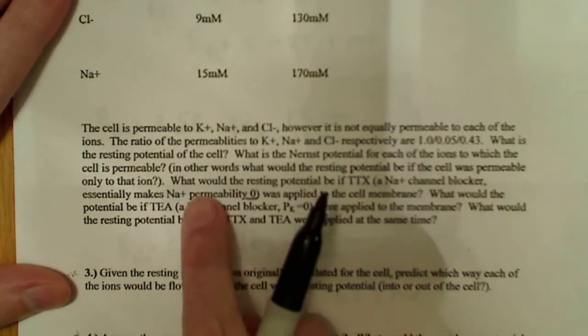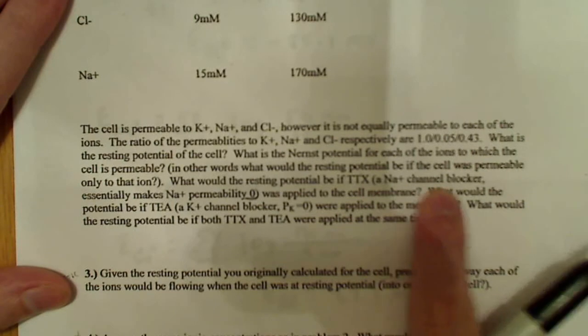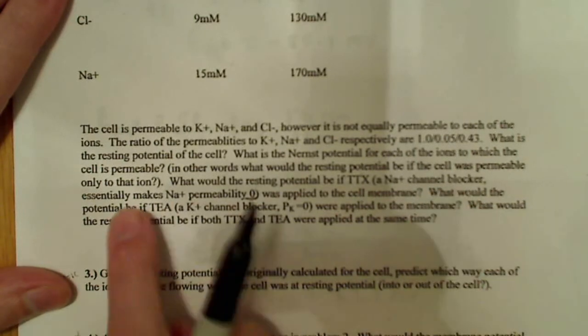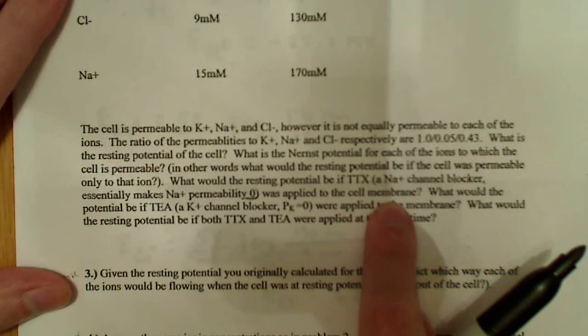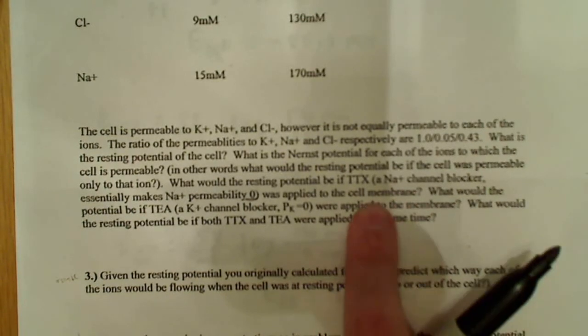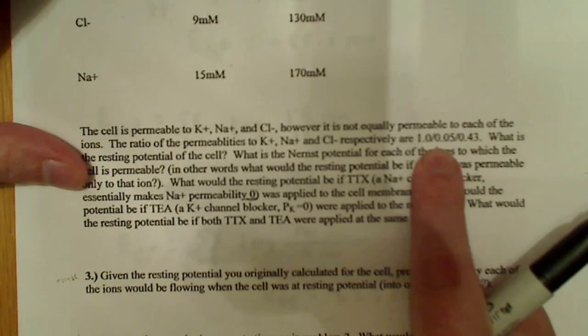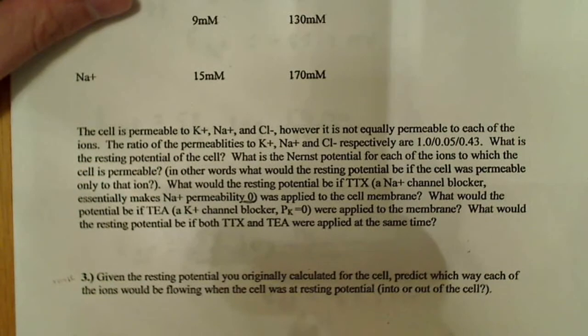Now that we've calculated the Nernst potential for each of these, it says: what would the resting potential be if TTX, a sodium channel blocker — so it's going to block the sodium channel — essentially makes Na+ permeability zero, was applied to the cell membrane? So they're saying we're applying this toxin; it's a sodium channel blocker. That essentially just means that the permeability value for sodium, which was 0.05, is just going to be zero now. So essentially sodium no longer matters.